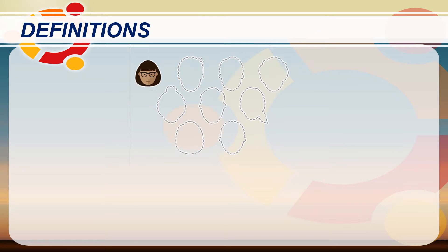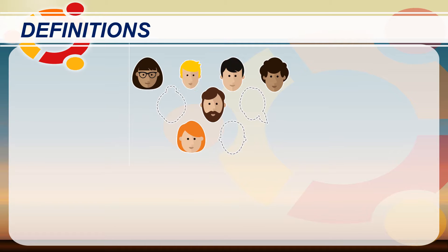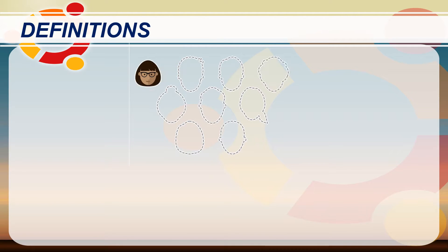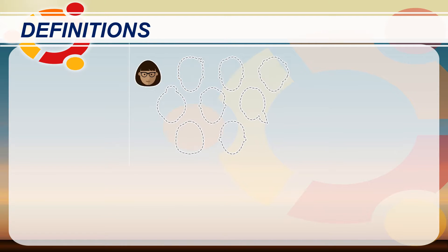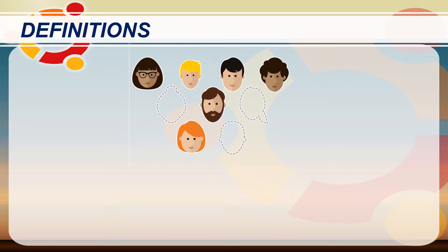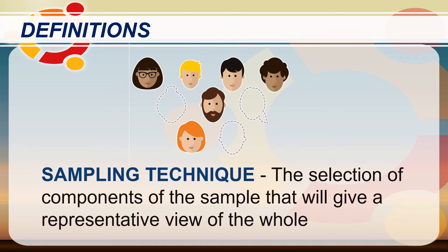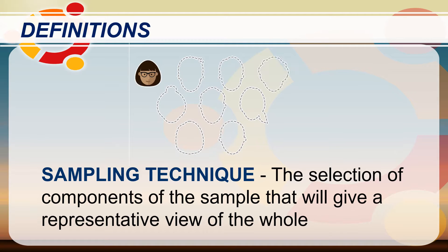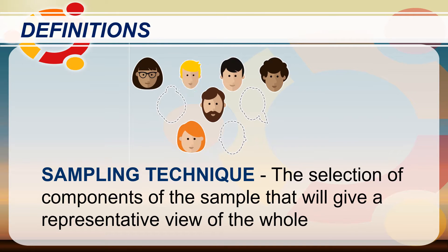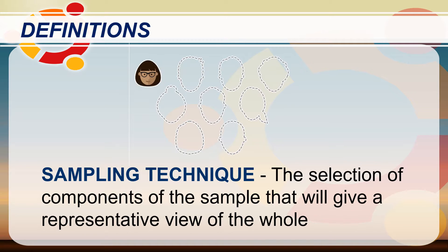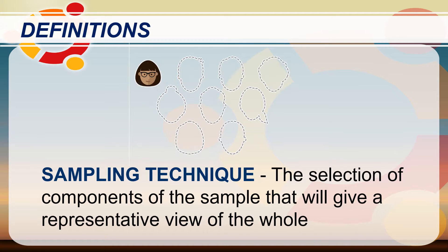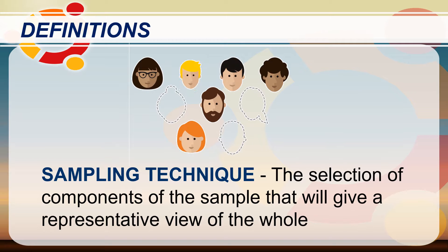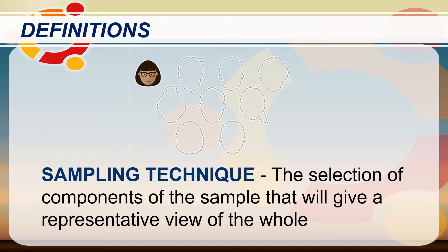In a normal classroom setup, teachers usually use an index card to randomly select students for oral recitation. This is to avoid bias selection of students. The same goes for sampling — researchers use random sampling to avoid being biased in the selection of the sample for their study. The selection of components of the sample that will give a representative view of the whole is known as the sampling technique. Selecting samples can be biased or unbiased. This lesson focuses on selecting samples unbiasedly, which is called probability sampling.